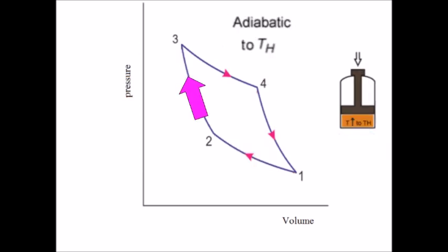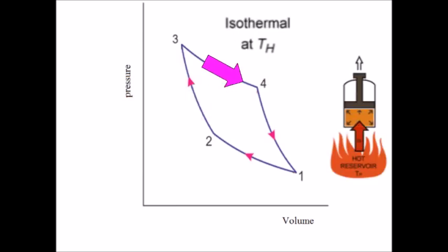Next, an adiabatic compression, an even smaller volume, but a new higher temperature. Then an isothermal expansion. Heat was added, so we're still at the same higher temperature. We've got high thermal energy at this point. Let's use it.